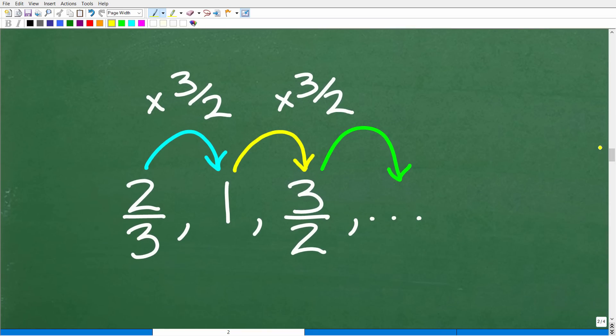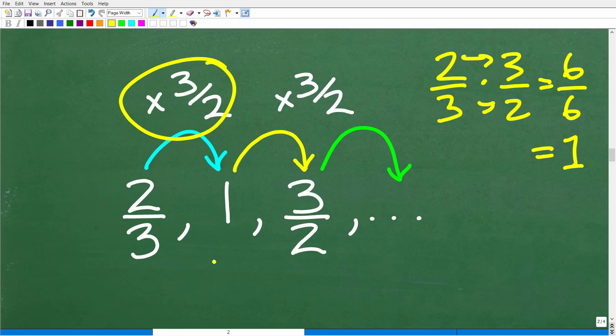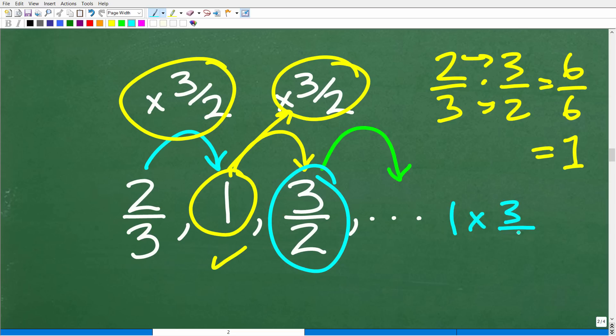We figured out that to go from two-thirds to one, if we multiply two-thirds by three-halves, let's test that. Two-thirds times three-halves is going to be what? We're going to multiply fractions, so two times three is six, three times two is six, so six over six is one. So indeed that works. Now let's take this one, multiply it by three-halves, and see if we end up with three-halves. One times three-halves, I think this is working. I think you are correct. We have three-halves.